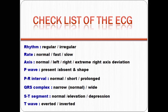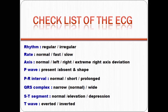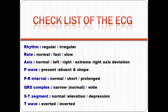The checklist of the ECG includes: the rhythm, whether it's regular or irregular; the rate, whether it's normal, fast, or slow; the axis, whether it's normal, right, or left; the P wave, whether it's present, absent, and its shape; the PR interval, whether it's normal, short, or prolonged; the QRS complex, whether it's normal, narrow, or wide; the ST segment, whether it's normal, elevated, or depressed; and lastly the T wave, whether it's upright or inverted.